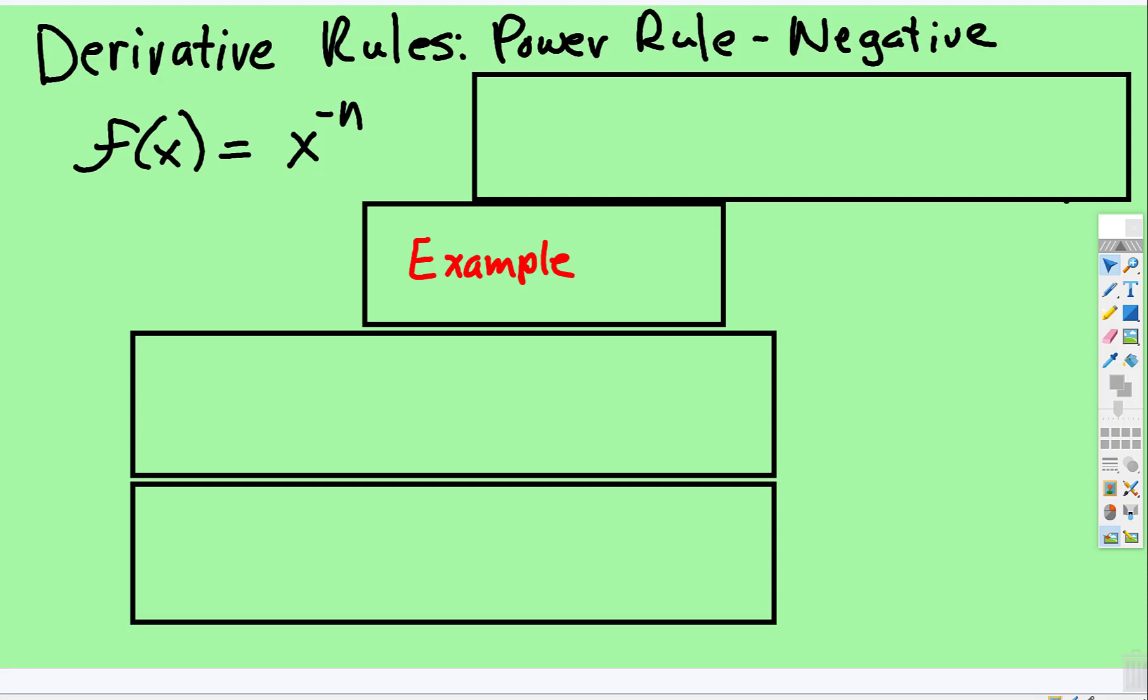Okay, we're still going to be working with the power rule, but now what happens when the exponent is negative?